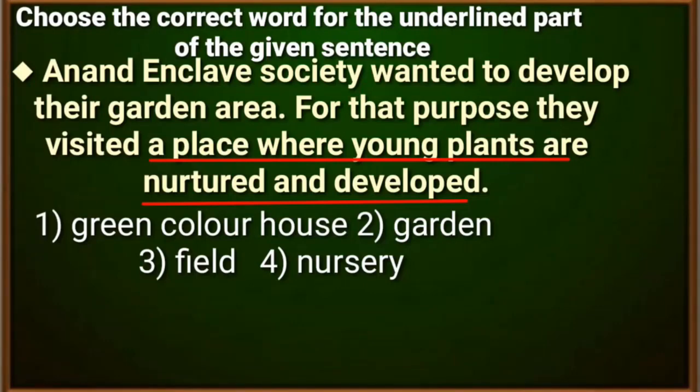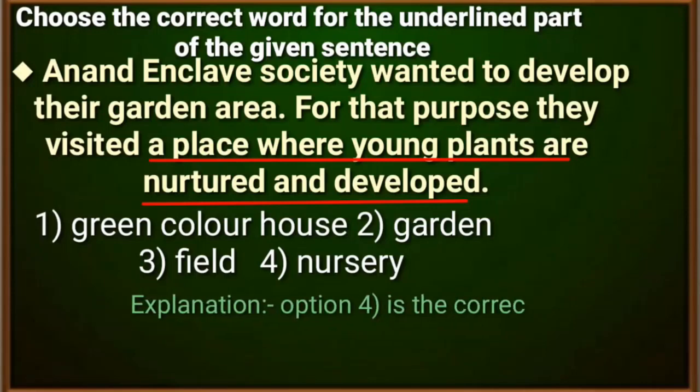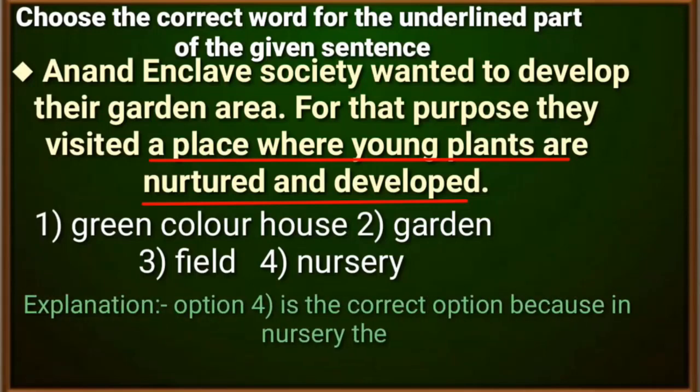Anan Enclave Society wanted to develop their garden area — they wanted to develop their garden. For that purpose, they visited a place where young plants are nurtured and developed — a place where small plants are prepared, grown, and taken care of. That is where they went. There are four options: first, greenhouse...